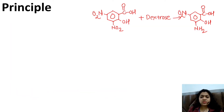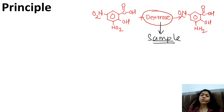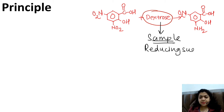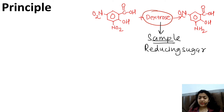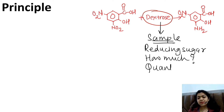This is the dextrose — I call this my sample or the test solution which is provided to me. I know dextrose is a reducing sugar. Since I know the name of the compound present in the given sample solution, I just want to find out how much dextrose is present. So, this comes under the category of quantitative analysis.